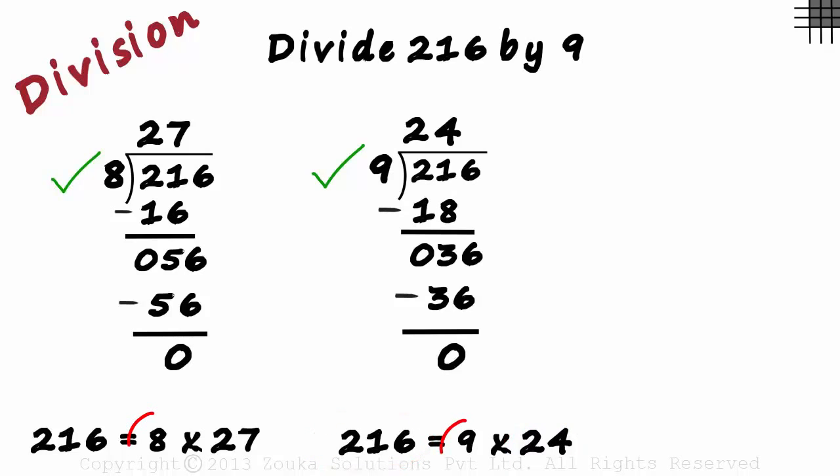In the process of finding out if 8 and 9 are factors of 216, we also found out two more factors of 216: 27 and 24.